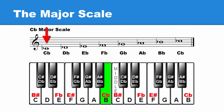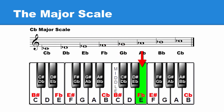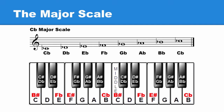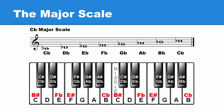Two whole steps up from C flat are D flat and E flat. One half step up from E flat is this key. F is the next letter in the musical alphabet, so it has to be some kind of an F. So we'll use the enharmonic spelling for this key, which is F flat. Three whole steps up from F flat are G flat, A flat, and B flat. Then one half step up from B flat is C flat again. That's the C flat major scale.